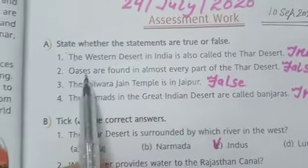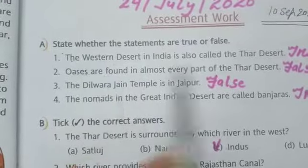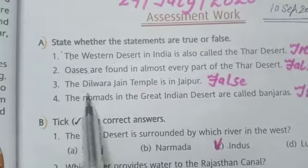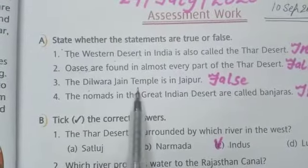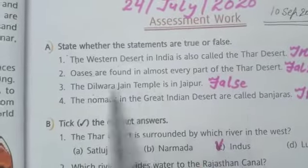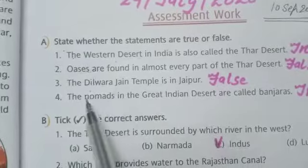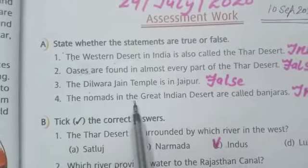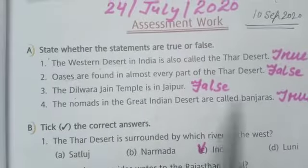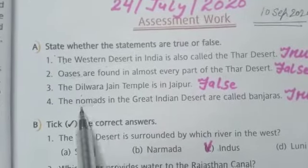Oases are found in almost every part of the Thar Desert — False. Oases are found in very few places. The Dilwara Jain Temple is in Jaipur — False.